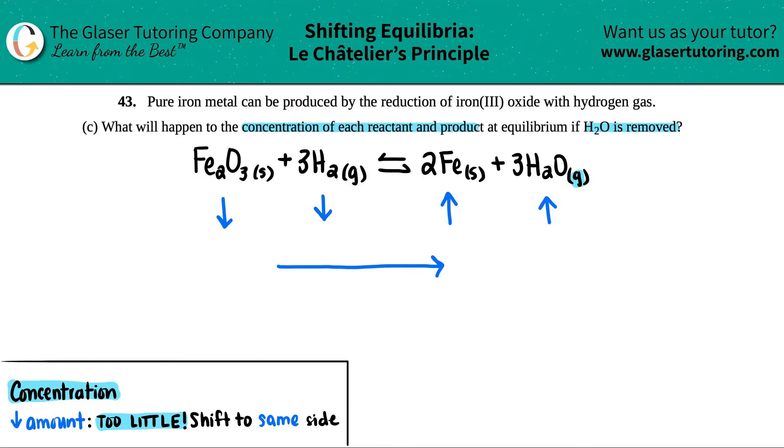Two solids here—solid and solid. Remember, solids are not allowed in the expression, the Kc expression. So are we really decreasing or increasing concentration? No, what we are doing instead is we're decreasing or increasing the mass for the solids.